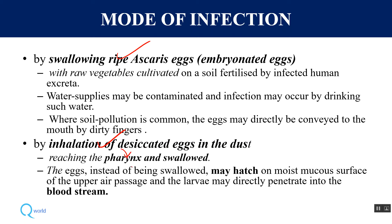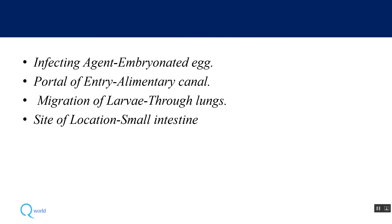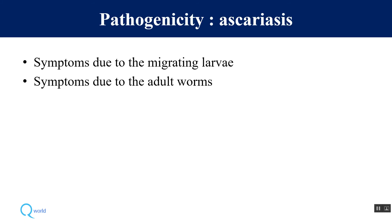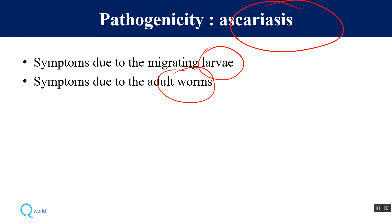Infection occurs by swallowing embryonated eggs, and sometimes by inhalation of eggs in dust, which then reach the pharynx and are swallowed. The infective agent is the embryonated egg; portal of entry is ingestion via the alimentary canal; migration is through the lungs; site of localization is the small intestine. The disease is known as ascariasis.